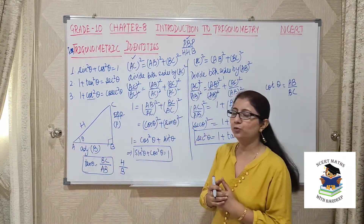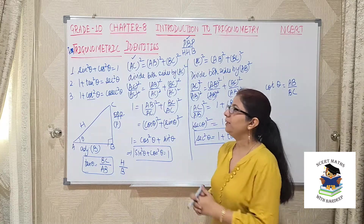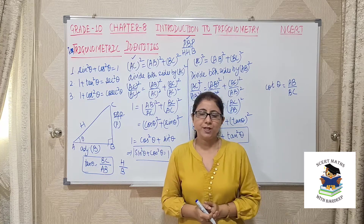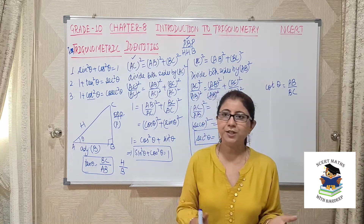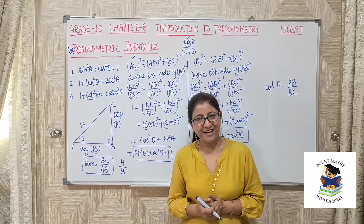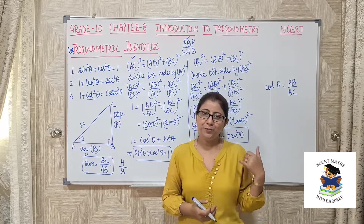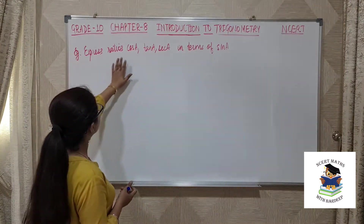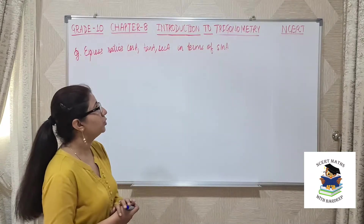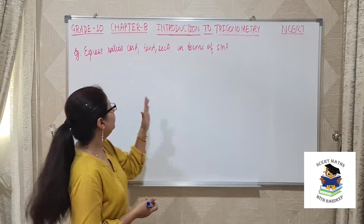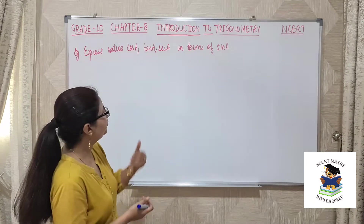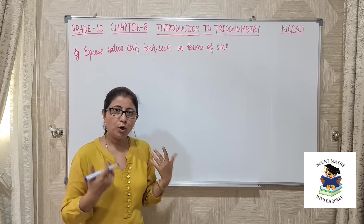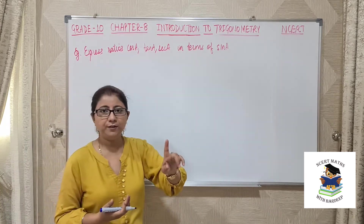This topic has a very important application. In the last exercise of this chapter, we will see how to prove certain equations using these identities. Now let's solve an example to make it more clear. The example is: express the ratios cos A, tan A, and sec A in terms of sin A. Here we need to express three different trigonometric ratios in terms of sin A.